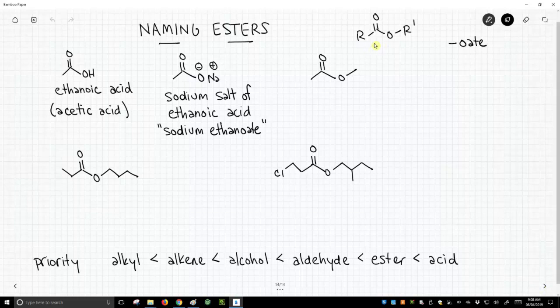I have a simple form of an ester drawn in the upper right. It is a carbonyl that is attached to a carbon group and some other OR group or OR prime. We're going to use oate as our key suffix for naming an ester.